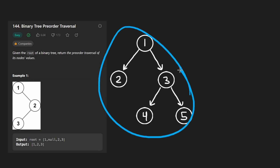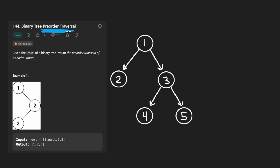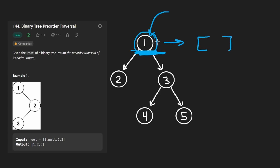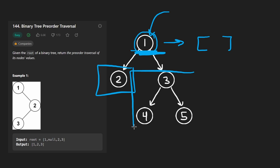Let's say we're given a binary tree like this. What is the pre-order traversal? Well, we're going to start at the root, and pre-order basically means that we're going to process this node — in this case, add it to the array that we're trying to build. We're going to do that first, and then we're going to recursively run pre-order traversal on the left subtree, and then after that run pre-order traversal on the right subtree.